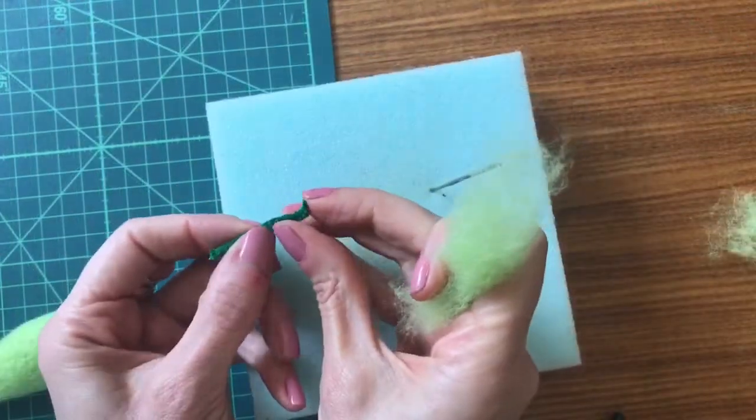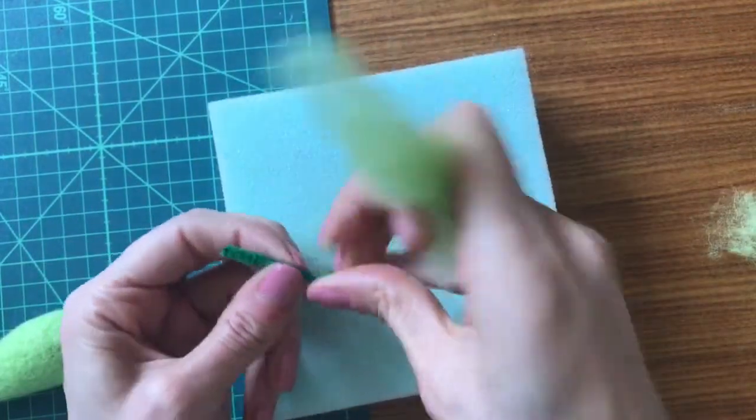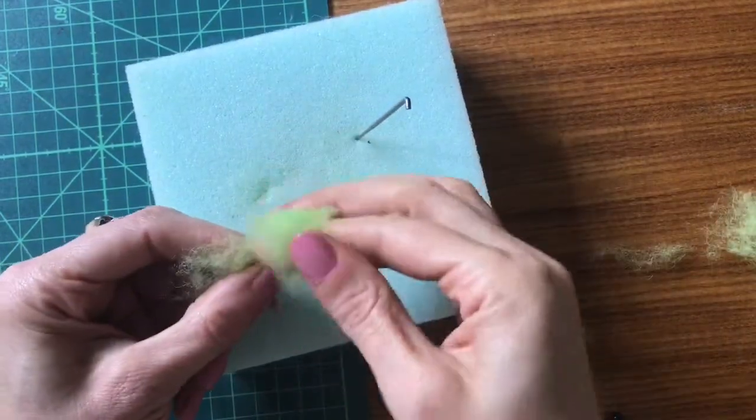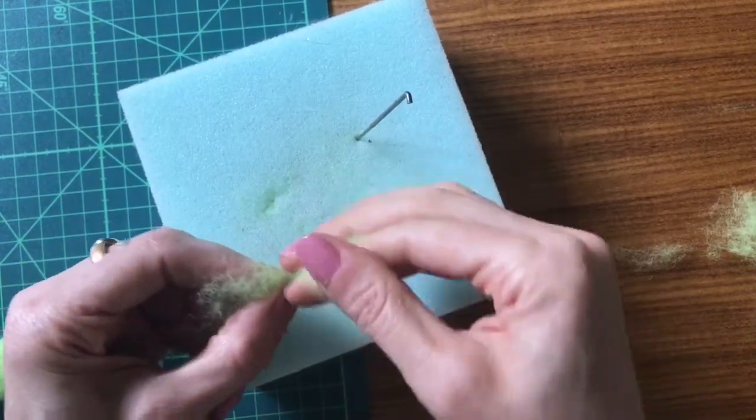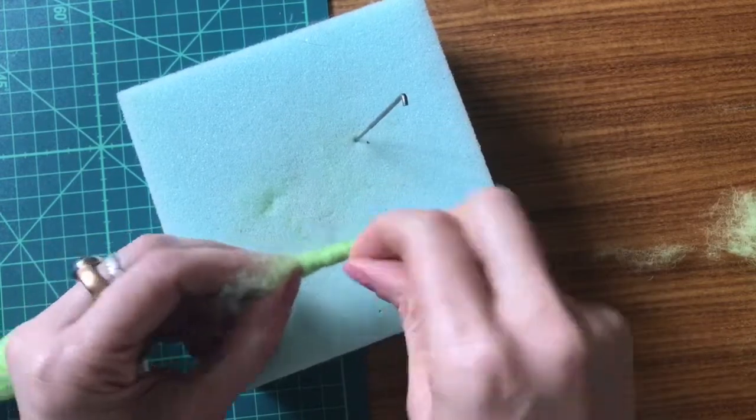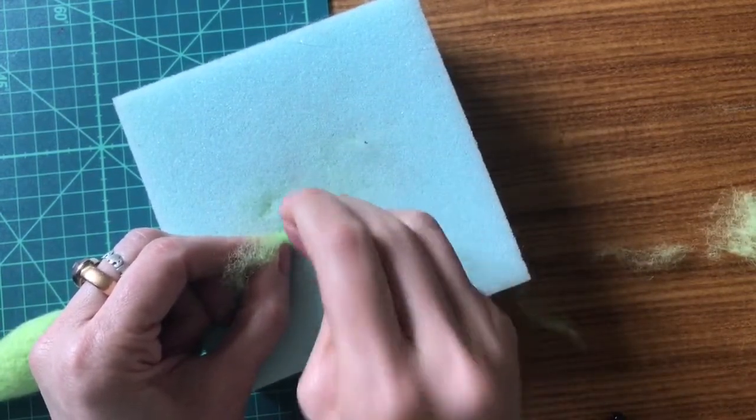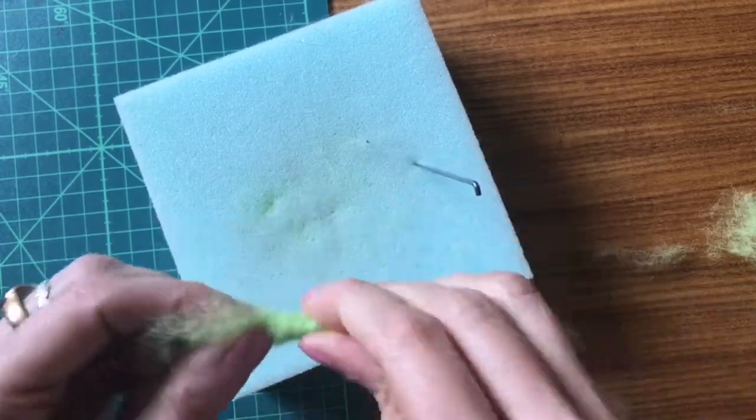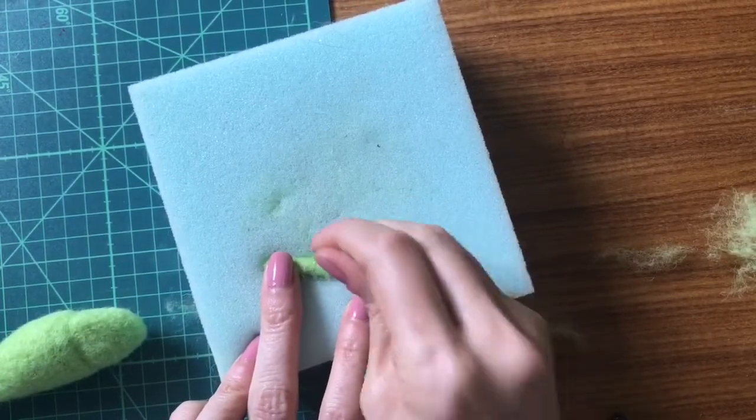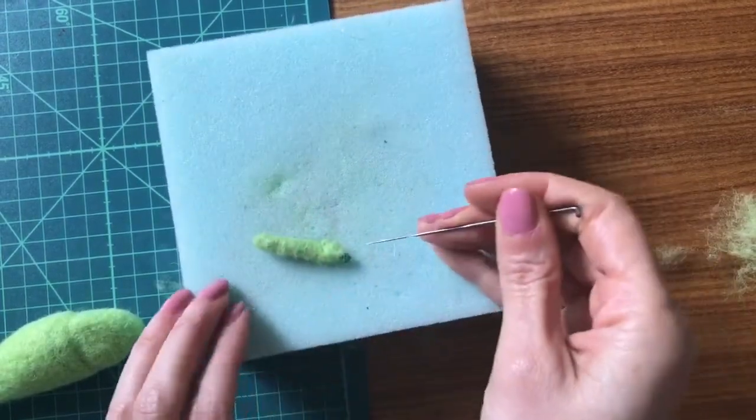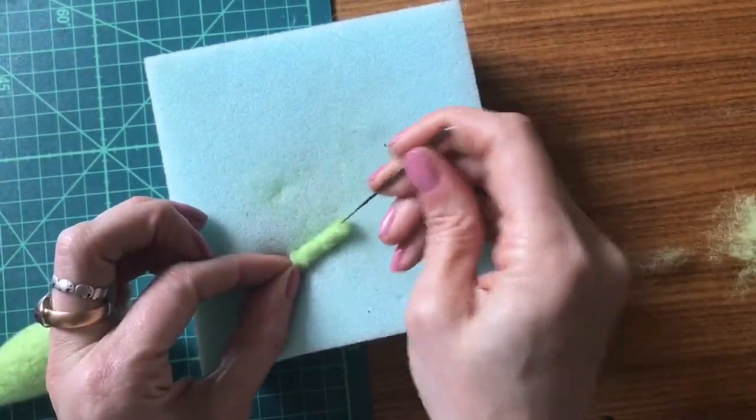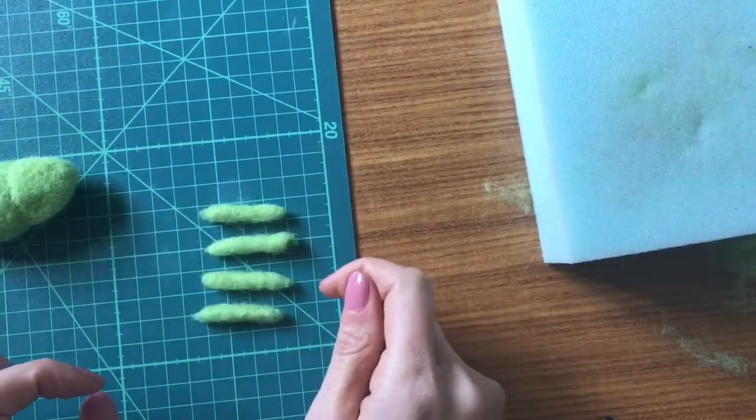Okay, we're making the legs now. You want to cut four pieces of pipe cleaner to the length. We fold the very tip over. I find less is more when it comes to wrapping the legs. I think I prefer thinner legs on this little chap than the thick ones. Just wrap them all around the foot end. Four little legs there.